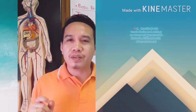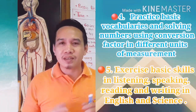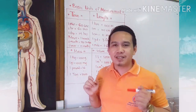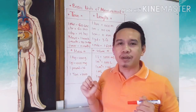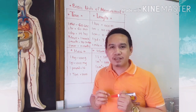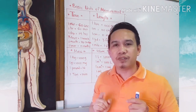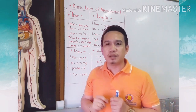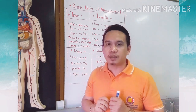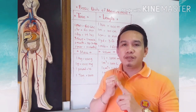But before that, let's have a short review about the different physical quantities and their units. Do you still remember what those physical quantities and their units are? Let's summarize: those physical quantities are length, time, temperature, mass, and electric current.